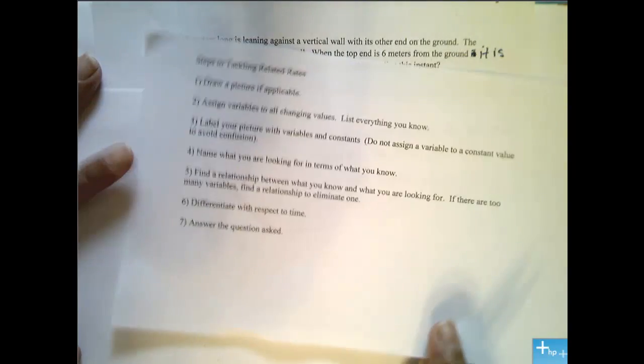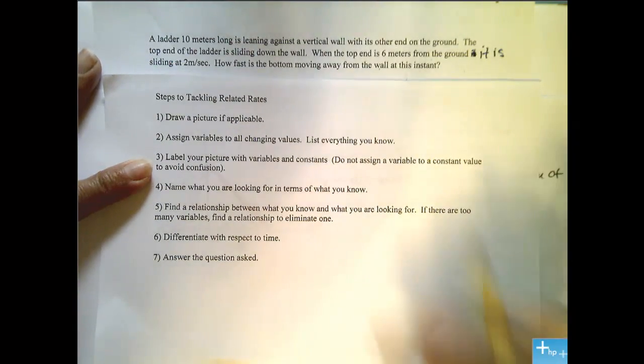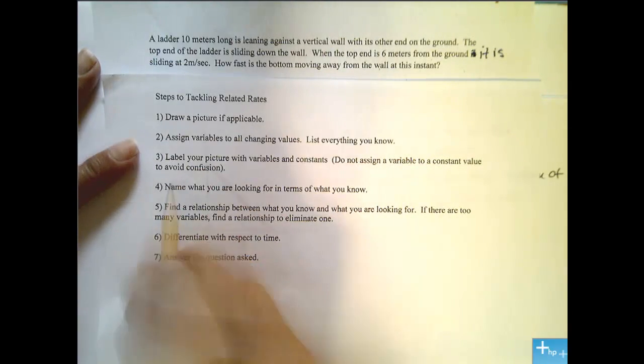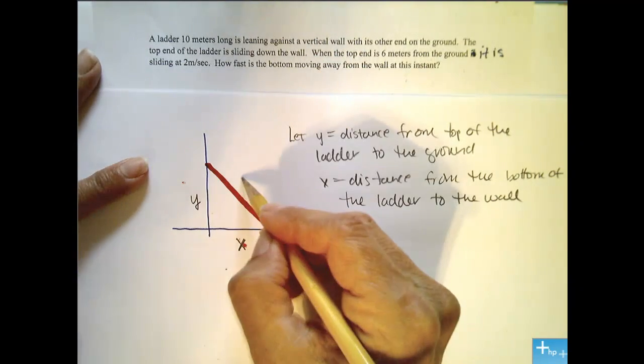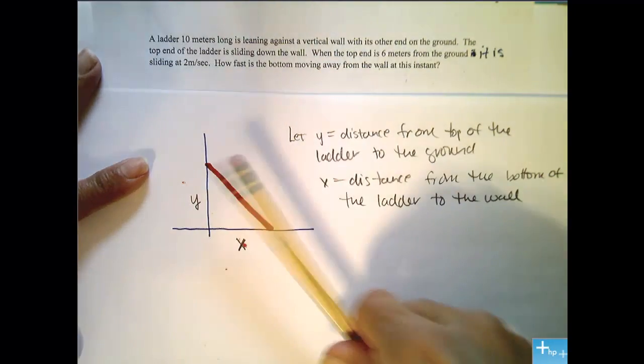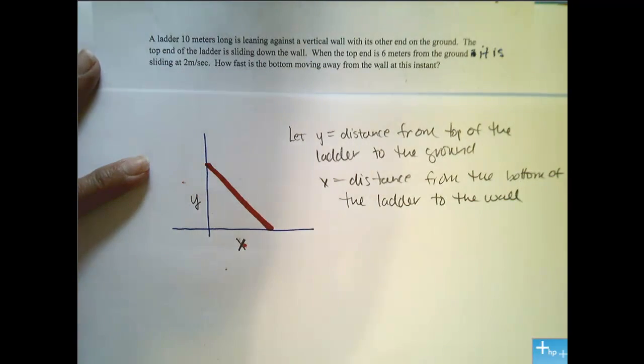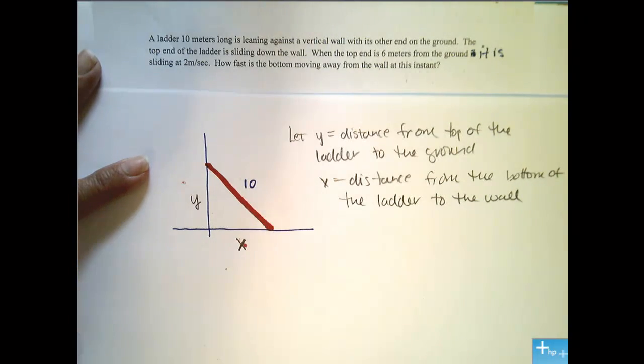Alright, I kind of did step 2 and 3 at the same time. Label my picture with variables and constants. Now look what I have here. Do not assign a variable to a constant value to avoid confusion. Sometimes we want to label this as z. However, this distance is not changing throughout this whole problem. The ladder stays 10 feet long the whole time. So we're going to go ahead and label it 10 and not give it a variable.